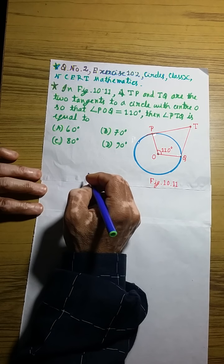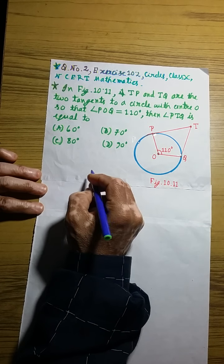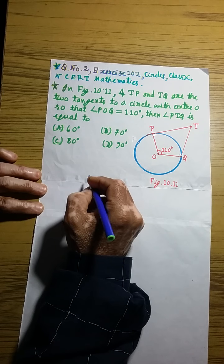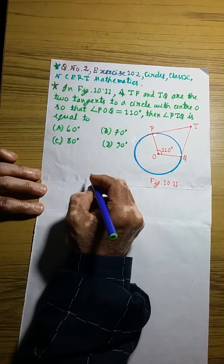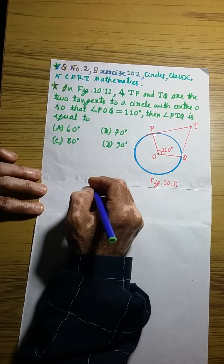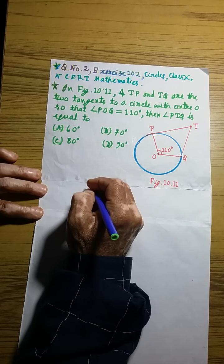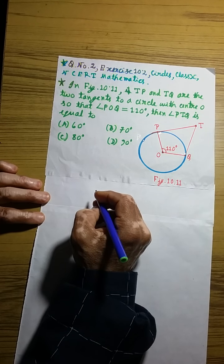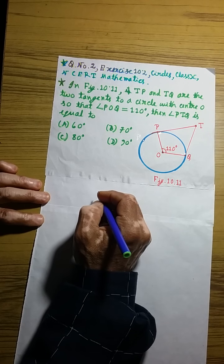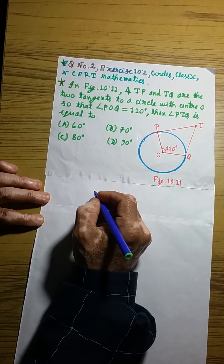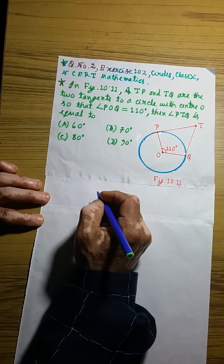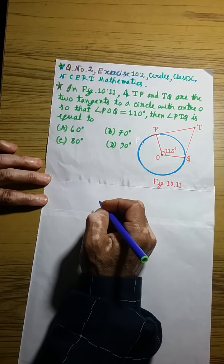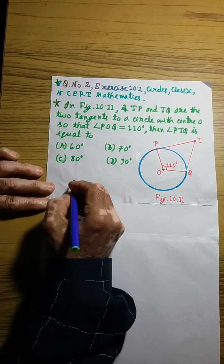we must have this pre-knowledge first. Number 1: the radii of a circle are perpendicular to the two tangents drawn from an external point to that circle at the points of contact. Number 2: the sum of all interior angles of a quadrilateral equals 360 degrees, according to the angle sum property of a quadrilateral.